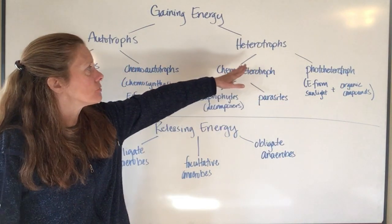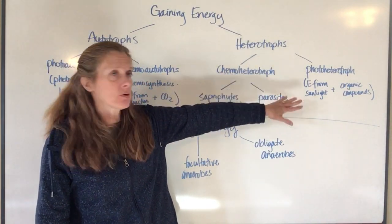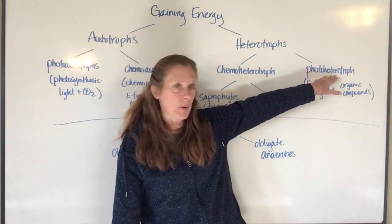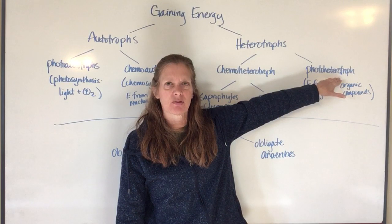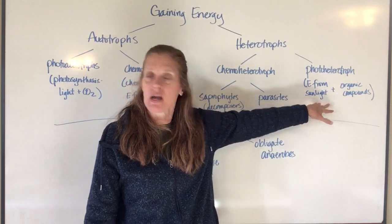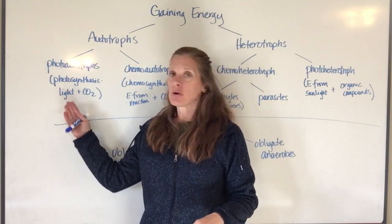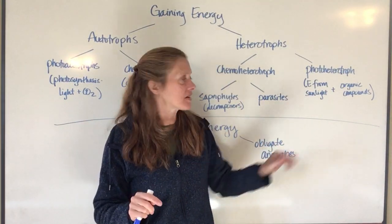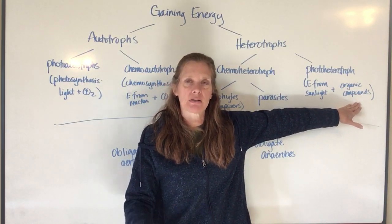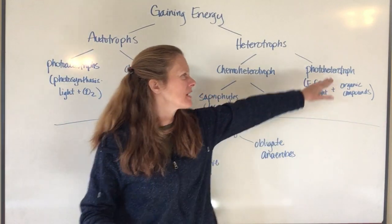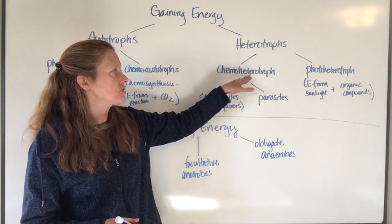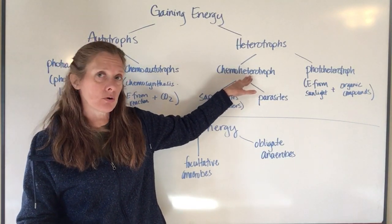There are also two types of heterotrophs: chemo heterotrophs and photo heterotrophs. Photo heterotrophs are kind of an anomaly — there aren't a whole lot of them. They use energy from sunlight just like photo autotrophs do, but they don't use carbon dioxide; they have to use some other organic compound to make the compounds they need to survive. The vast majority of bacteria fall into the category of chemo heterotrophs.